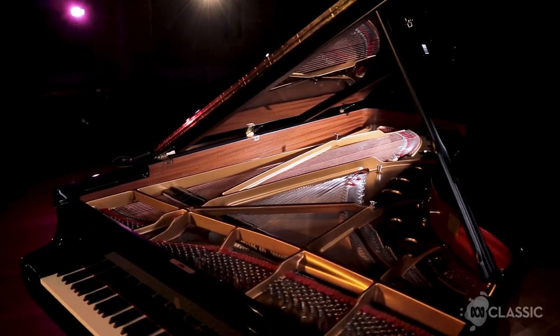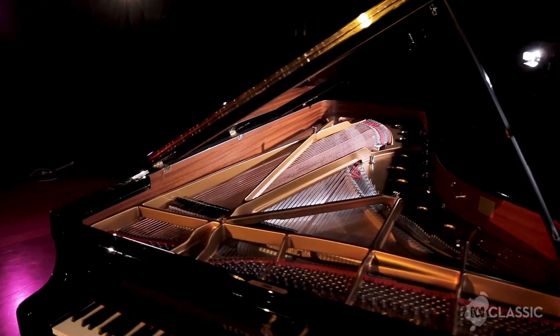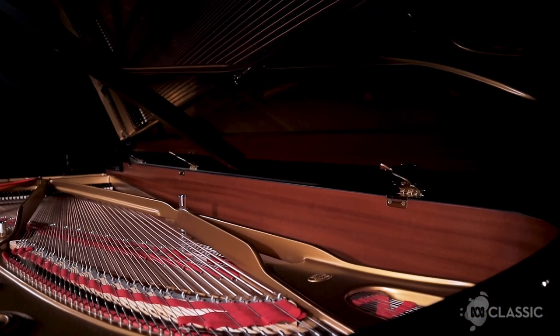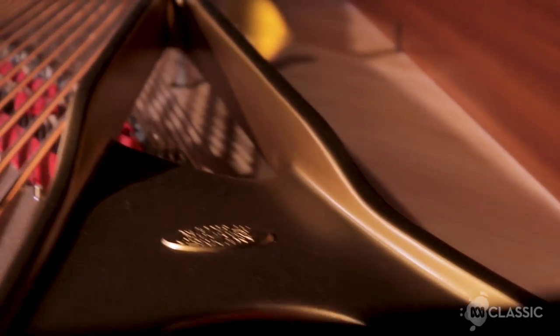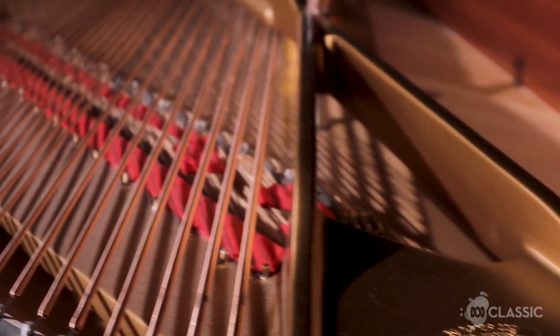On this concert piano there are 243 strings with an average tension of over 70 kilograms per string. That's a total of over 20 tons of tension on the frame. There are three strings in most of the notes, two further down, and one single string for the bottom eight notes. This is to give a much more even volume throughout the instrument.